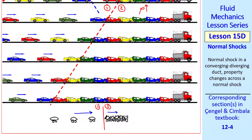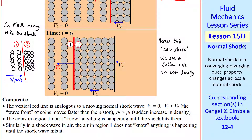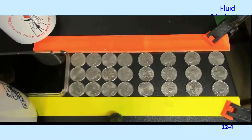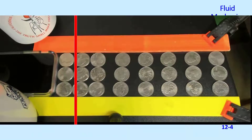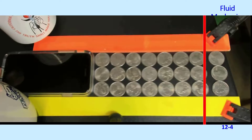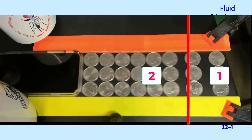In a frame of reference moving with the shock, the shock would be stationary. From this reference frame, V1 would equal Vs — these coins are moving to the right at speed Vs since the shock is stationary. Again, the speed upstream of the shock is greater than the speed downstream of the shock. I set up a little experiment pushing some coins with my cell phone. The red line is the wave front of the coins, which represents the shock. Regions 1 and 2 are analogous to the flow before and after this moving shock.